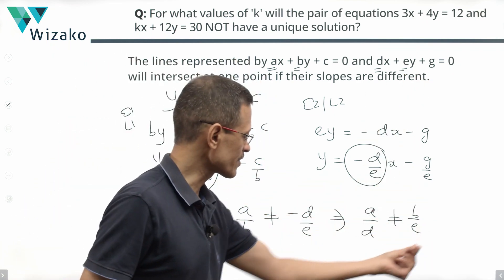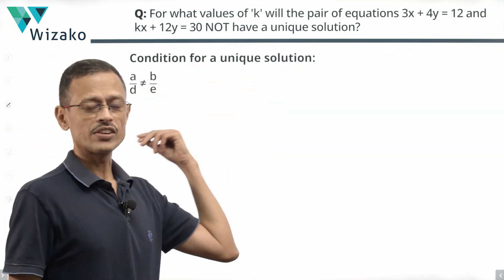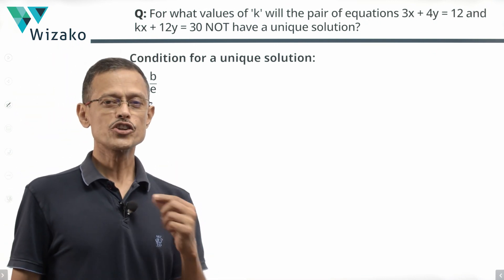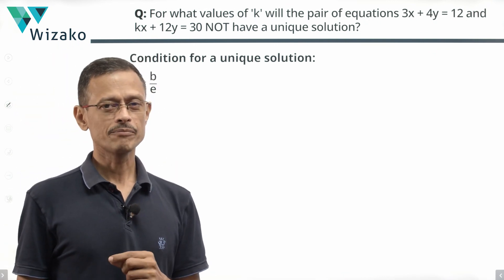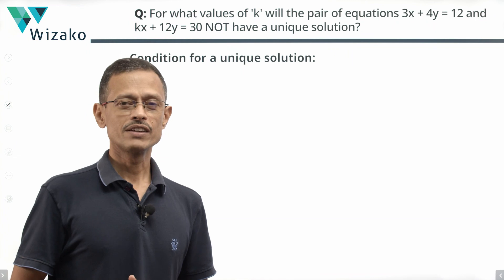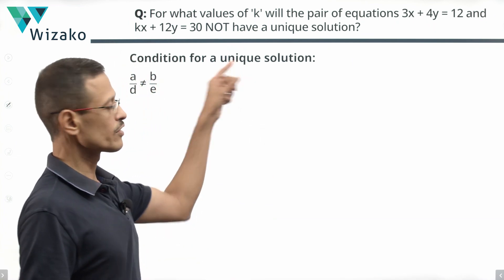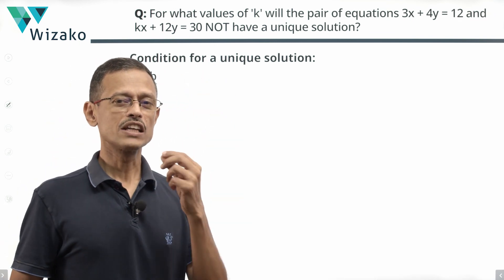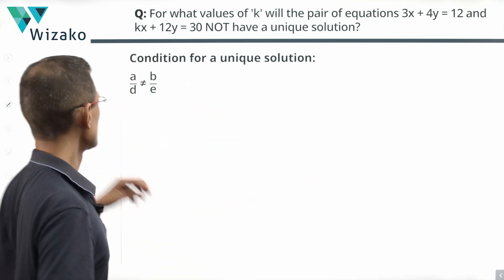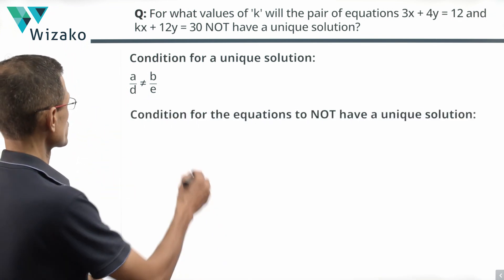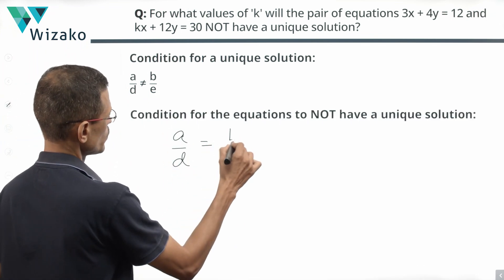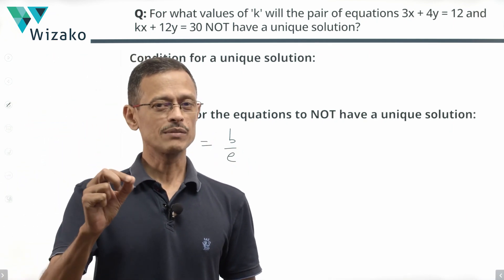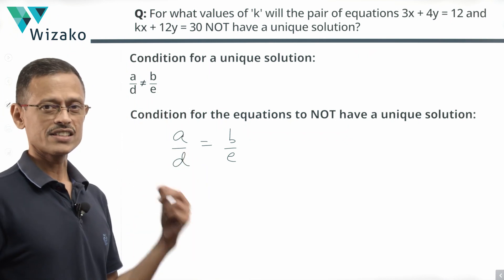To have a unique solution, the condition is A/D ≠ B/E. When will there be no unique solution? When this condition is not satisfied — that is, when the slopes are equal, meaning A/D = B/E. A pair of linear equations in two variables will not have a unique solution when A/D = B/E.